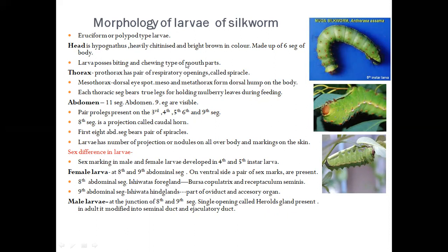To differentiate larvae of male and female silk moth, sex markings develop in fourth and fifth instar larvae. In female larvae, at the eighth and ninth abdominal segments on the ventral side, a pair of sex marks are present. The Isiwata fore glands are present at the eighth abdominal segment and Isiwata hind glands at the ninth abdominal segment. In male larvae, at the junction of the eighth and ninth segment, a single opening called herald's gland is present. In the adult, this herald's gland is modified into the seminal duct and ejaculatory duct.